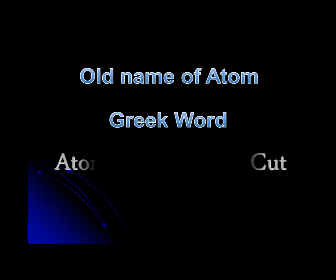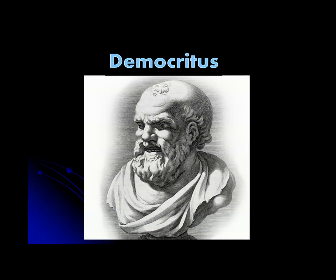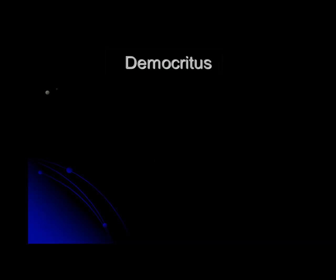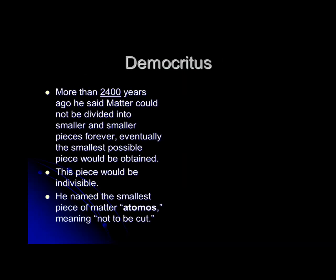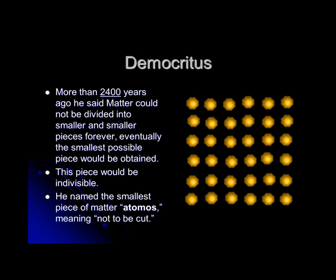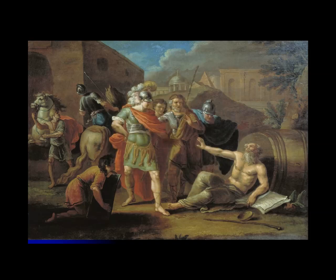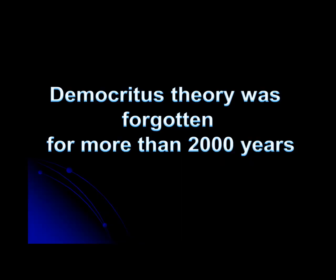The old name of atom is a Greek word 'atomos', meaning 'not to be cut', and this name was introduced by Democritus. He was the Greek philosopher who, for the first time, introduced this word more than 2400 years ago. Democritus said that matter could not be divided into smaller and smaller pieces forever — eventually the smallest possible piece would be obtained, which he named atomos, meaning not to be cut. Unfortunately, no one believed him and his theory was forgotten for more than 2000 years.